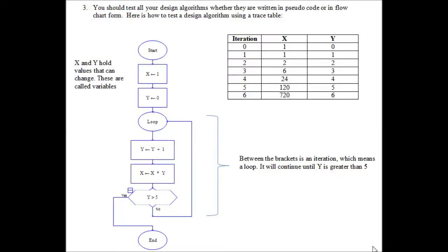In this short video, I'm going to show you how to use a trace table to check the flow of a flowchart as it goes through an algorithm. It will check the variables, in this case X and Y, which can be assigned values that will change throughout the algorithm.